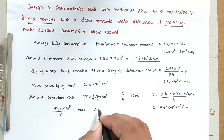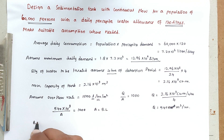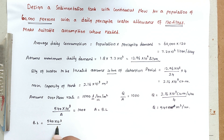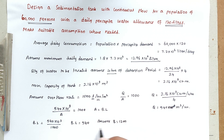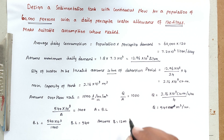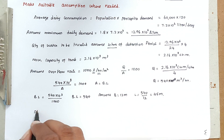The plan area equals B × L. Substituting: B × L = 540×10³ divided by 1,000, so B × L = 540 m². We assume B = 12 meters. Therefore, the length of the tank equals 540 divided by 12, which gives L = 45 meters.